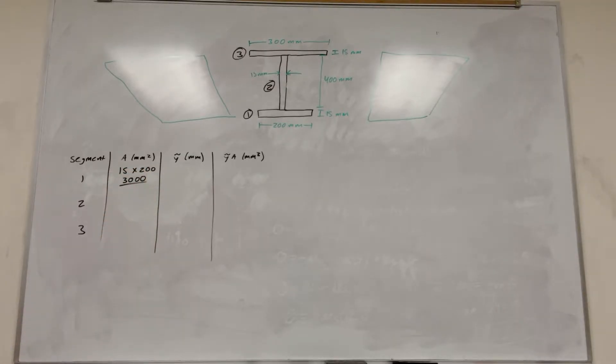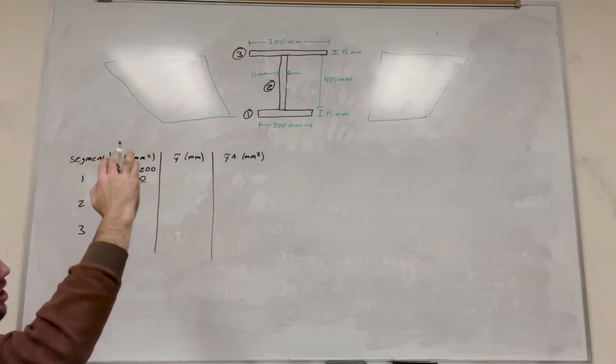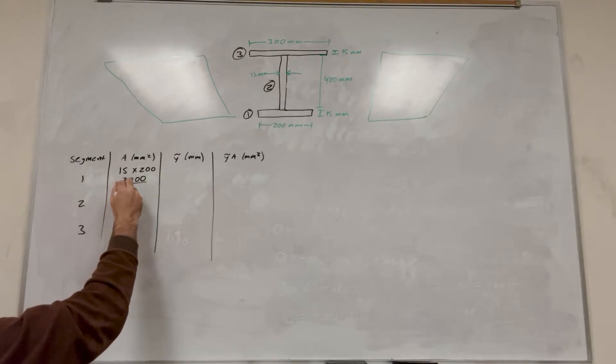Right? So then the next one, segment two, it's 15 thin and 400 tall, so it's going to be 15 times 400, which is 6,000.